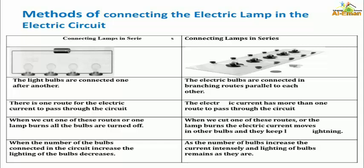When we cut one of these routes, or one lamp burns out, all the bulbs are turned off. Also, when the number of bulbs connected in the circuit increases, the lighting of the bulbs decreases.